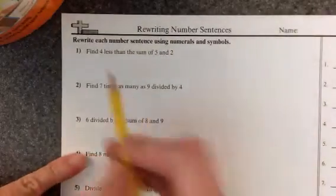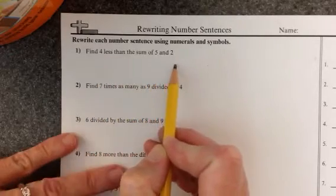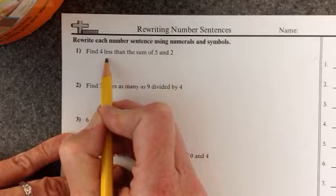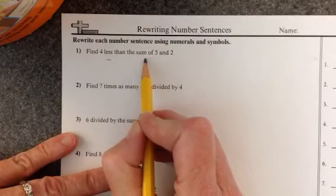So let's look at the first one. Find 4 less than the sum of 2 and 5. Find 4 less means to minus. And here we're going to do the sum of 5 and 2.